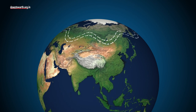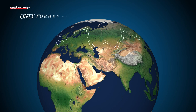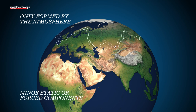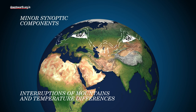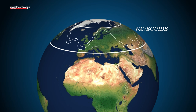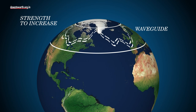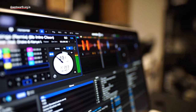Rossby waves are composed of two intricately linked types: synoptic and forced waves. Synoptic waves move quickly and are formed only by the atmosphere, but they also contain minor static or forced components. Forced waves are formed by interruptions of mountains and temperature differences across continents and oceans, and these contain minor synoptic components as well. These two types interact with each other within an atmospheric channel called a waveguide. This interaction allows their strength to increase and influence the weather, and is also called wave resonance.